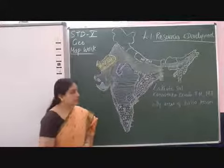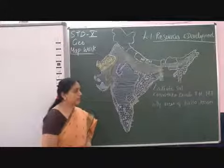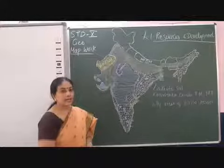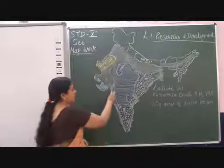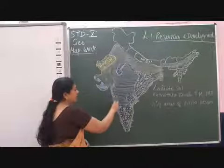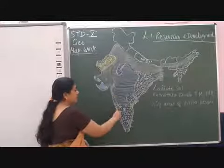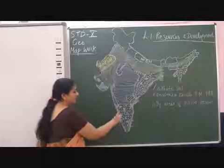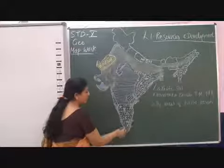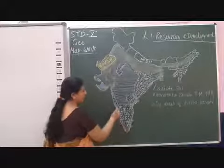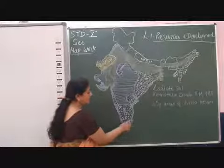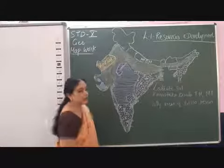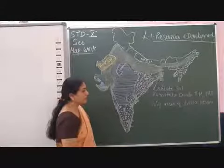Laterite soil is especially found in Karnataka — this is the area of Karnataka — Kerala — this is the area of Kerala — and Tamil Nadu. This part of Tamil Nadu also has laterite soil.